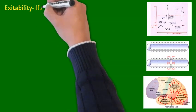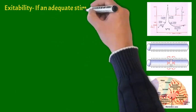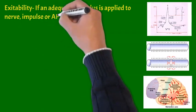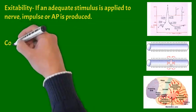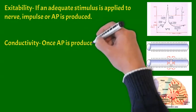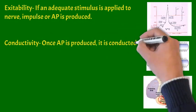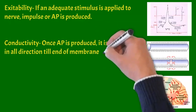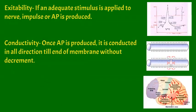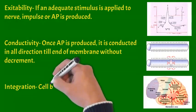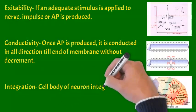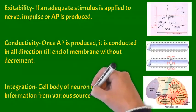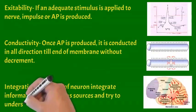Let us see all these three properties in little detail. Excitability is when an adequate stimulus is applied to nerve, impulse or action potential is produced. Uppermost diagram. Conductivity is once action potential or impulse is produced, it is conducted in all direction till end of membrane without any decrement. Middle diagram. And integration we can see lower diagram. Cell body of the neuron integrates information from various sources and tries to understand these.